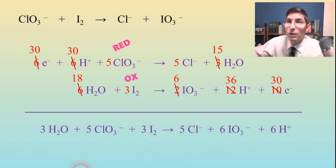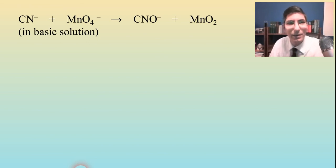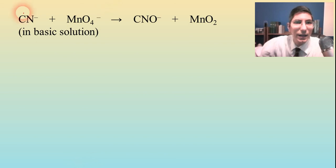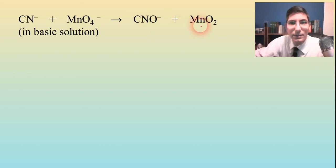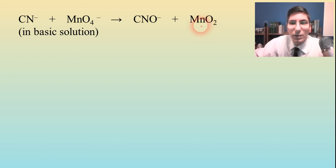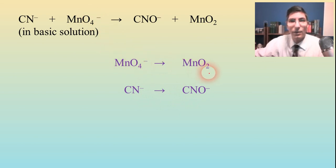Let's do one more example — this time in a basic solution. This is just like the last one except there's one last little step at the end. We're going to take the cyanide ion plus permanganate and produce the cyanate ion plus manganese(IV) oxide. The first thing is to separate these: cyanide going to cyanate is one pair, and permanganate going to manganese(IV) oxide is the other.